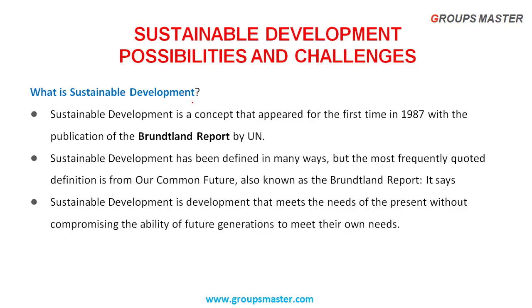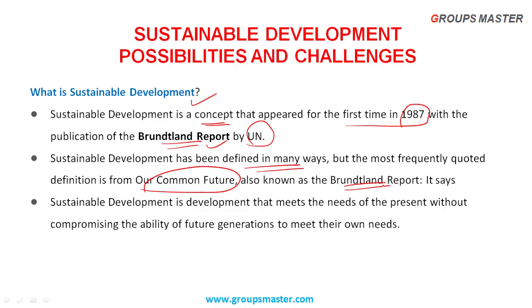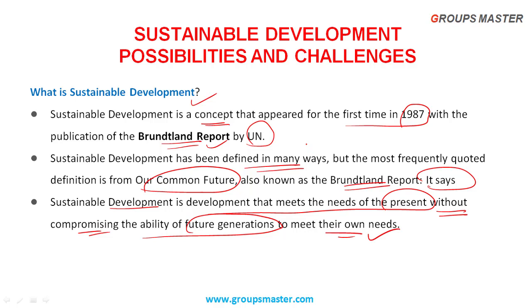Sustainable Development: Possibilities and Challenges. What is Sustainable Development? The concept was first introduced in 1987 by the United Nations Brundtland Report. Sustainable Development is defined as development that meets the needs of the present without compromising the ability of future generations to meet their own needs. We should not wastefully utilize natural resources and energy resources, so future generations can also benefit.